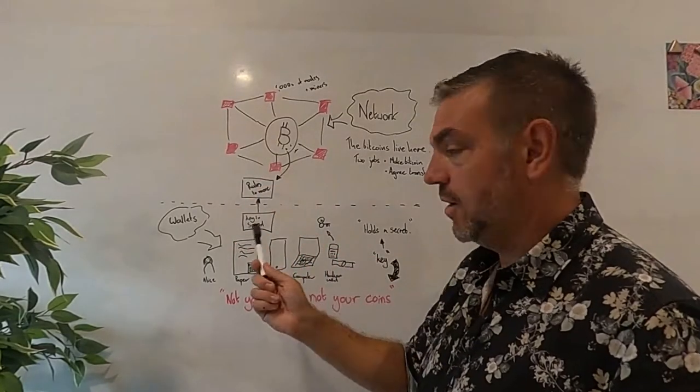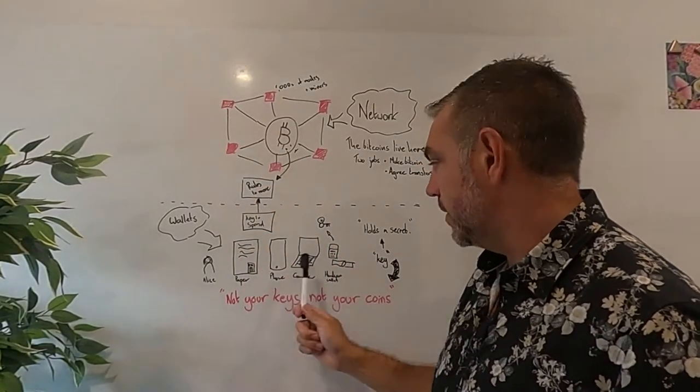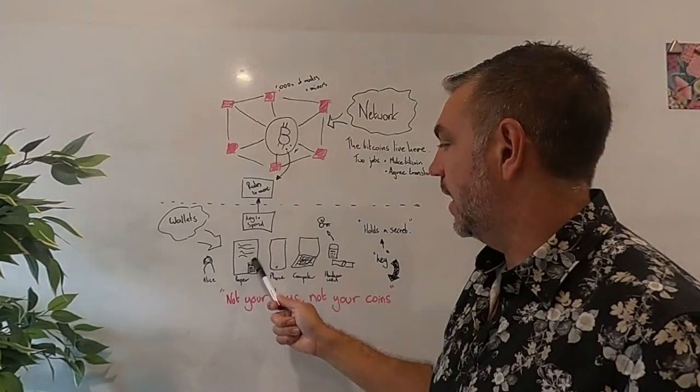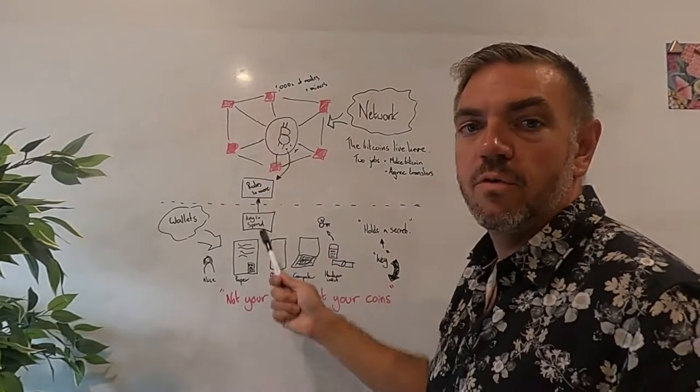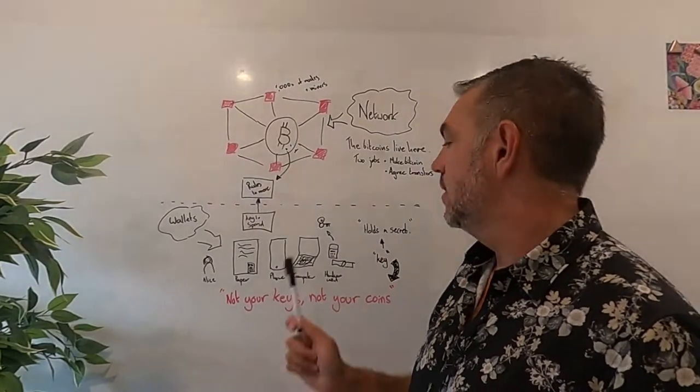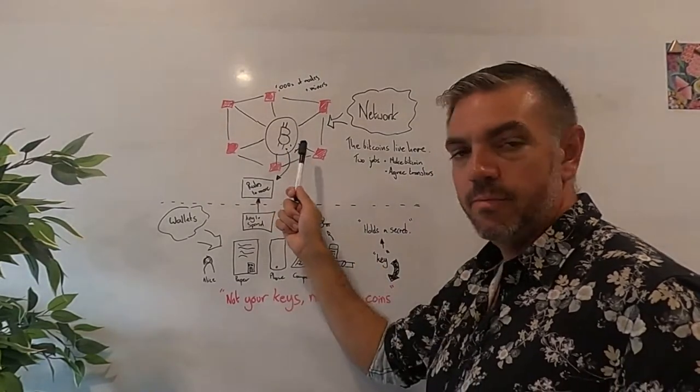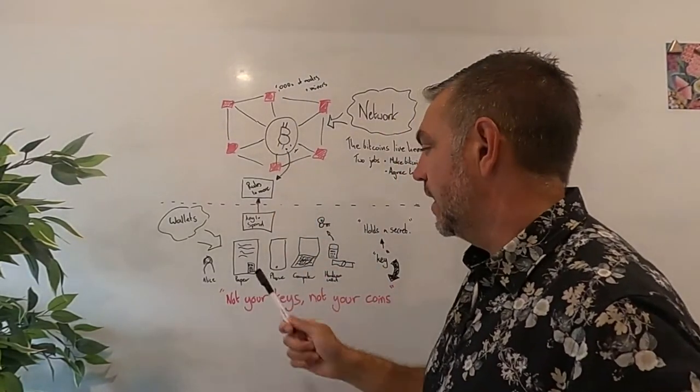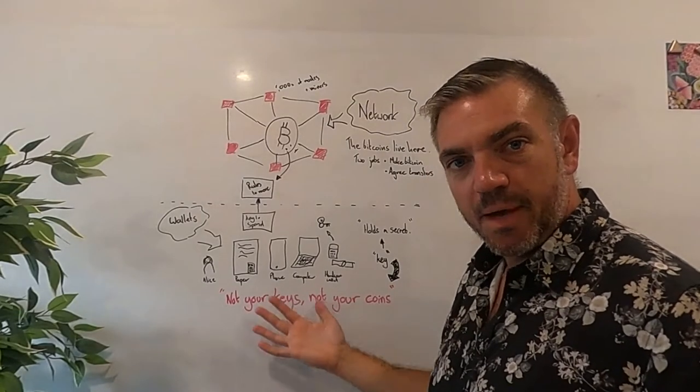Anybody can see these rules and I can go and check them myself. And the wallet software that Alice has would say, go and look across all of the Bitcoin that are available in the world and check if any of them can be spent using key X. And she finds this one here. And Alice goes, oh, fantastic. There's my Bitcoin.